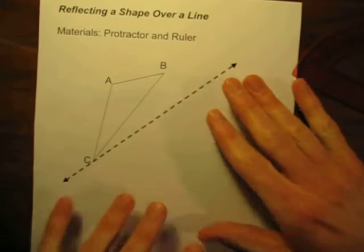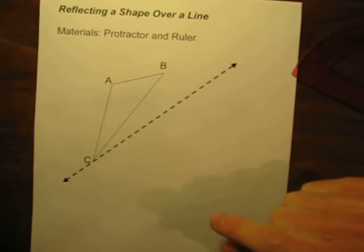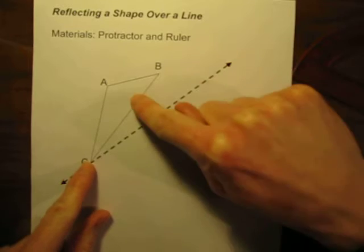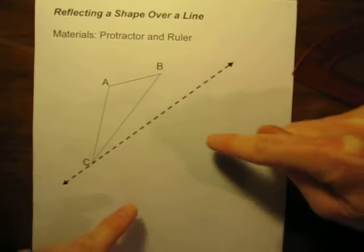So first of all, before we even begin, let's just try to visualize what this is going to look like. This is the line of reflection and we're going to take this triangle and reflect it over.